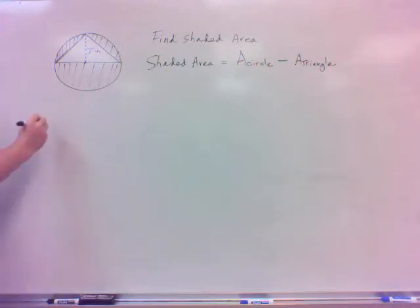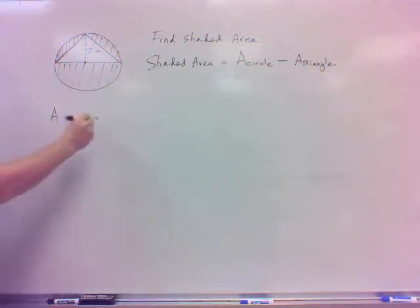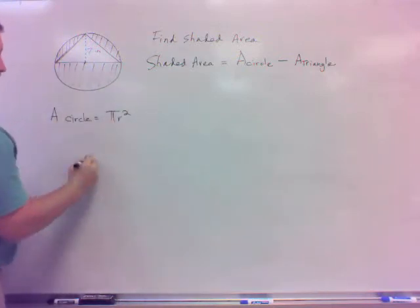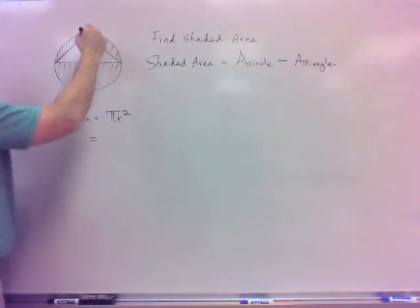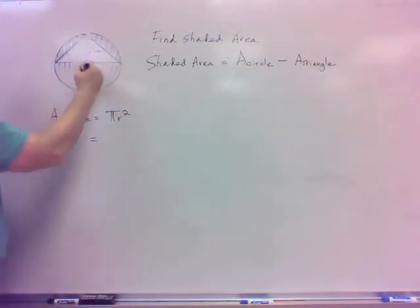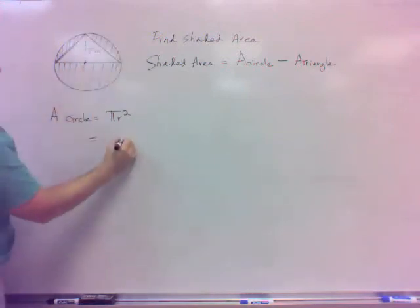Alright, let's talk about the circle area. Area of a circle, formula, if you don't know, need to know, what is the area of a circle? Pi r squared. So you need to know the radius. What is the radius of the circle? It's 7, isn't it? It's the distance from the center to the outside of the circle. Here you go. 7. The radius is 7.